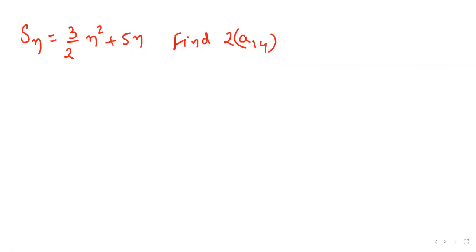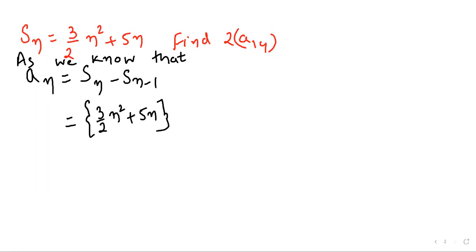In this particular question we have given Sₙ, that is called the sum, 3 by 2 n squared plus 5n. We need to find 2 times a₁₄. That means we have the formula aₙ is equal to Sₙ minus Sₙ minus 1. That means Sₙ same, 3 by 2 n squared plus 5n, now Sₙ minus 1.